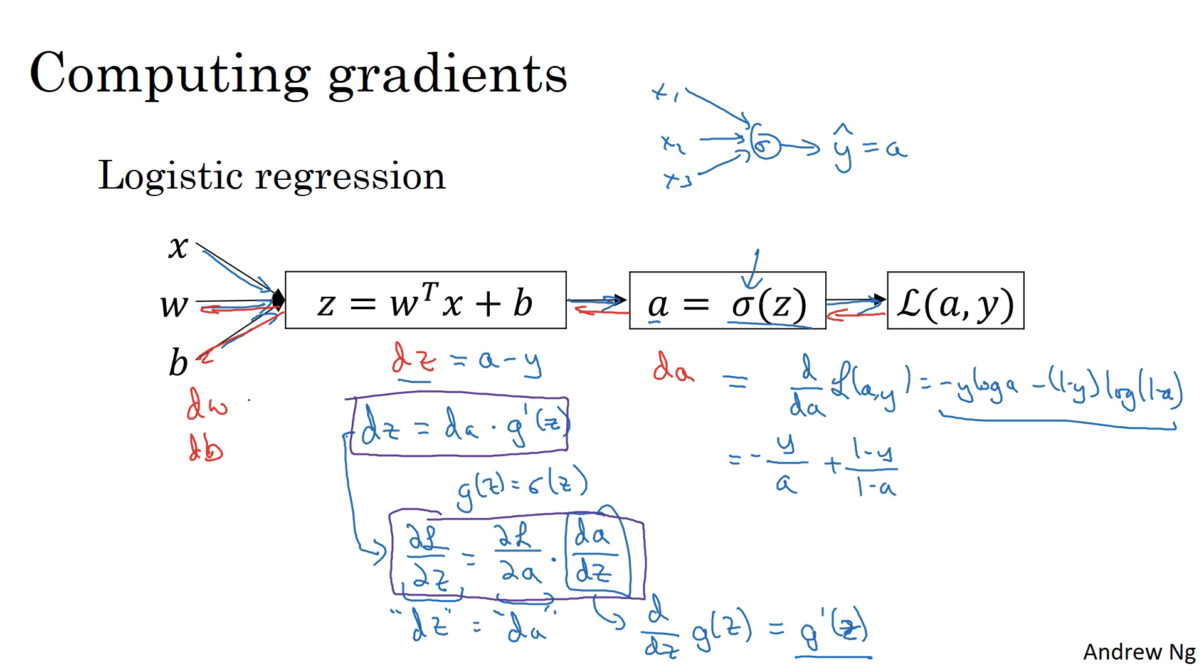Finally, having computed dz for logistic regression, we would compute dw, which it turns out was dz times x, and db, which is just dz when you have a single training example. So that was logistic regression.